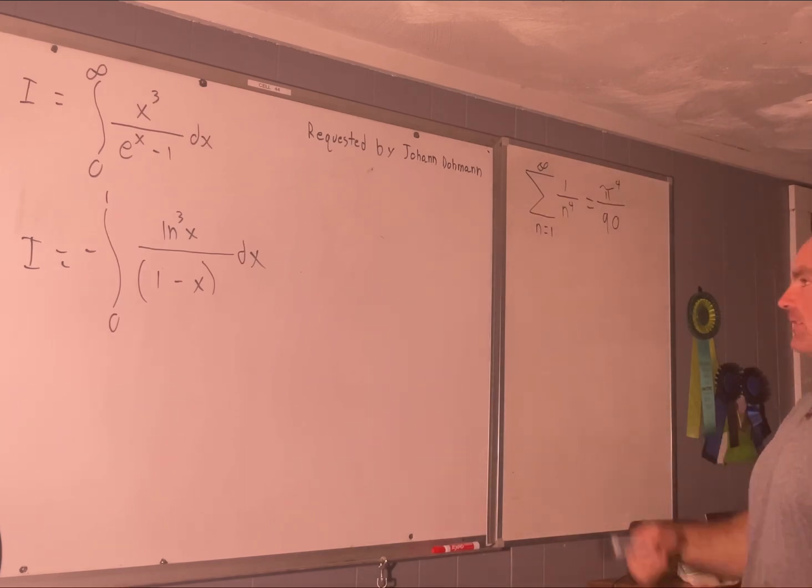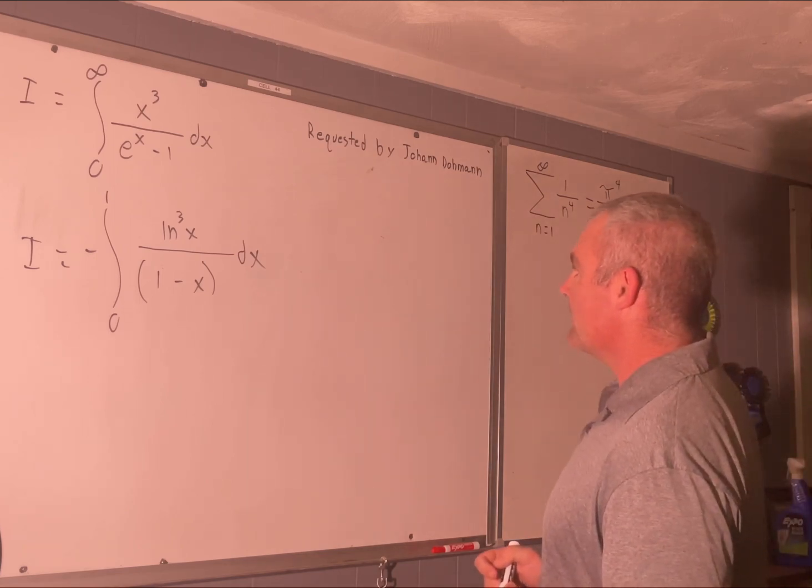So i is also equal to negative integral 0 to 1 of natural log cubed over 1 minus x dx. And Johan, let's see if from here you can figure out the answer. Just go ahead and pause it and try it from there. Okay. If you didn't get it, this is how you do it.